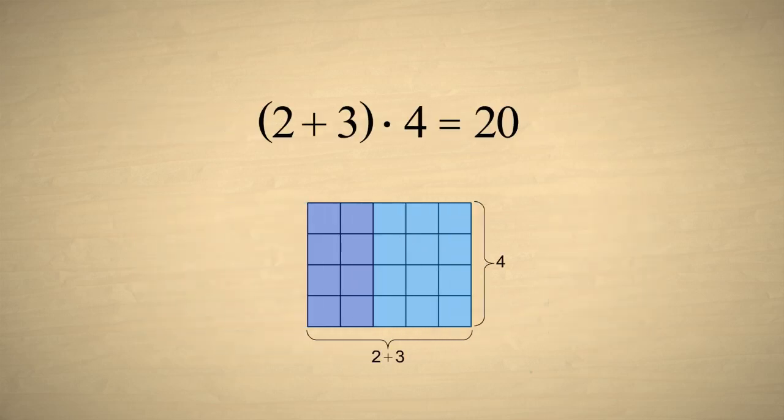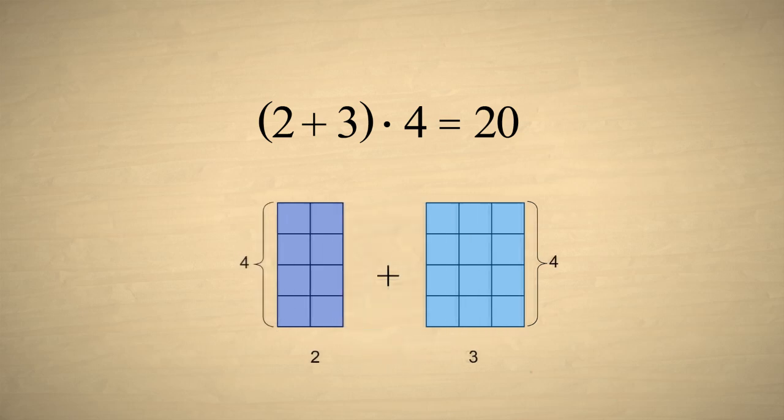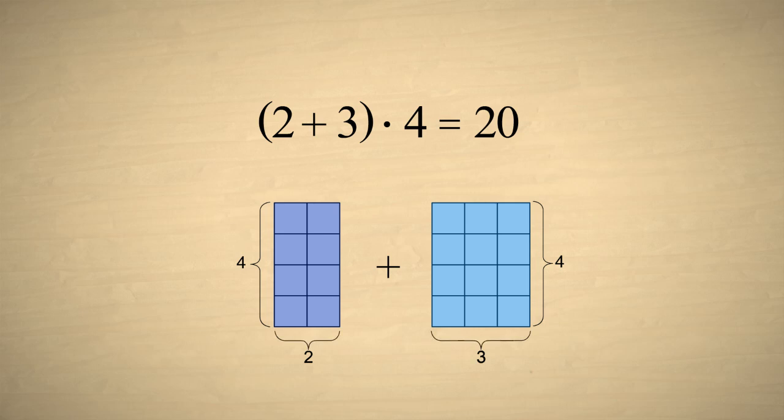So how could this expression be written without parentheses, without changing the result? We can see from the diagram that both the 2 and the 3 must be multiplied by 4. So if we remove the parentheses, we must multiply each number in the parentheses by 4. In other words, the multiplier must be distributed to each number in the parentheses.